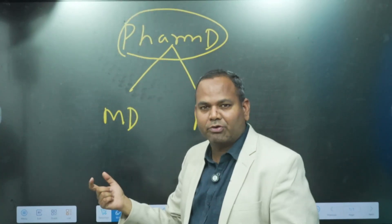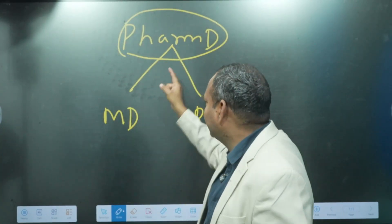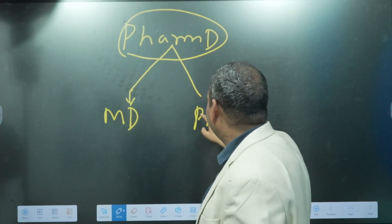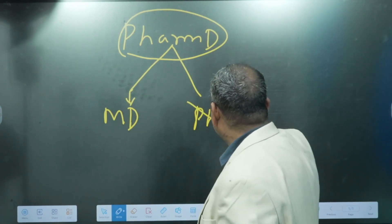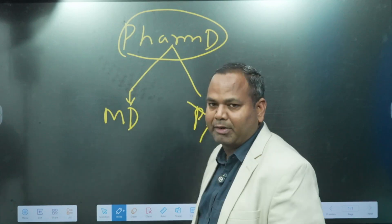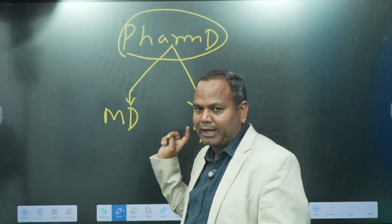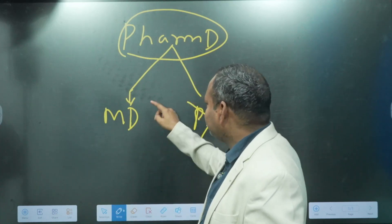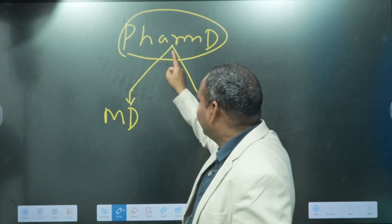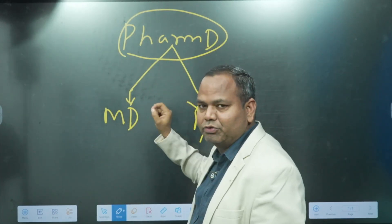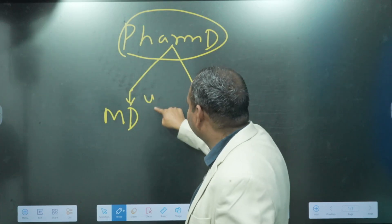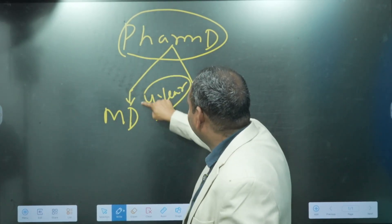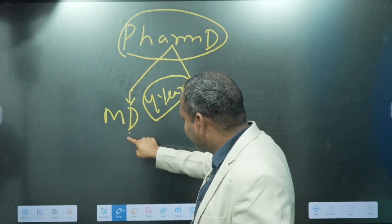PharmD is a six-year course in some countries, or five years in others. Once you've completed it, you are eligible to do MD. I'm not talking about PhD right now — I'll discuss that in my next video with a comparison. If you want to do MD in Australia, it is a four-year program that you can pursue after your PharmD.